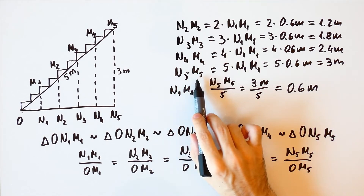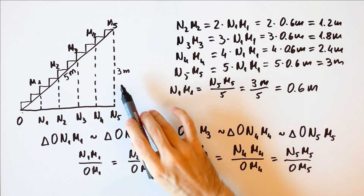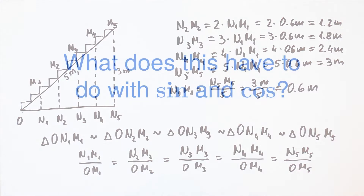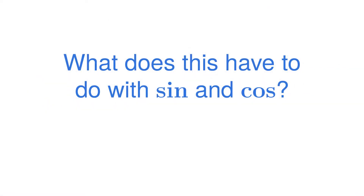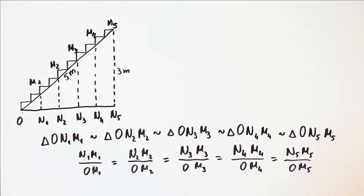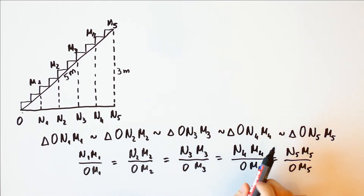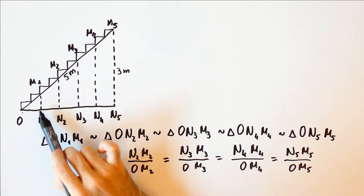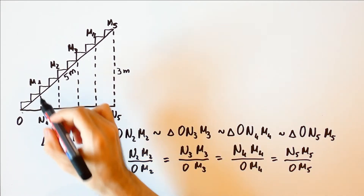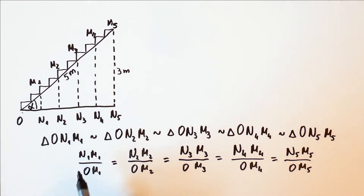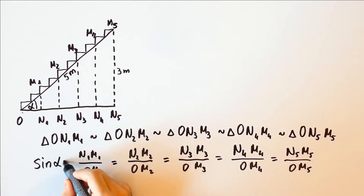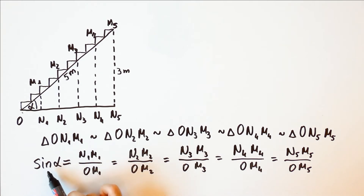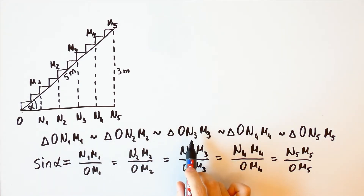But of course, we already knew that N5-M5 is equal to 3 meters, since that was given. We saw that these ratios are equal, and that is always the case when we have similar triangles. However, in this particular case, those triangles are right triangles, and we say that the sine of this angle, that we shall call alpha, is equal to these ratios. Note that the sine of alpha doesn't depend on any particular triangle, since for all similar triangles the corresponding ratios are equal.